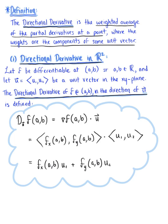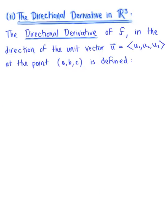This is only the definition in R2. Let's see how this changes in R3 — the directional derivative in space. The directional derivative of a function f in the direction of the unit vector u, at some point (a, b, c) where a, b, and c are scalar values, is defined as follows.